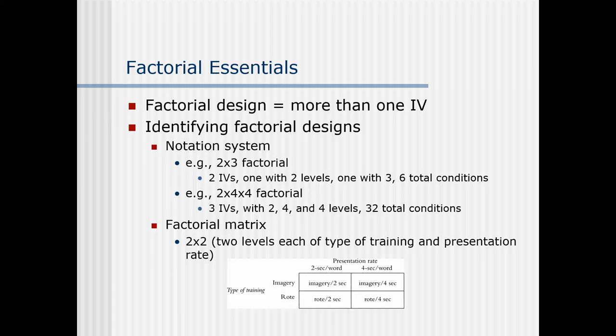Sometimes we will also list the names of the independent variables and levels. So we would say a two — in parentheses, gender: male/female — by three — condition, empathy: high/medium/low. That's how we would sometimes label it.